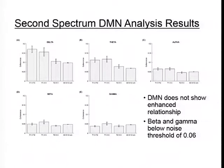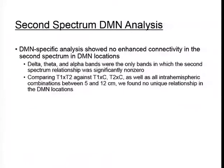In the alpha band — the other band proposed to contain these electrophysiological correlates — we again don't see a significant difference between T1–T2 and T1–C. To summarize: we don't see any enhanced connectivity in the second spectrum in DMN locations. The delta, theta, and alpha bands were the only bands in which the relationship was significantly non-zero, and there was no unique relationship found in these DMN locations.